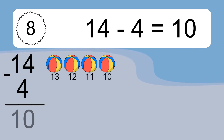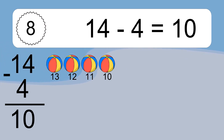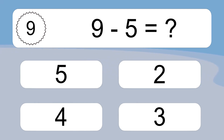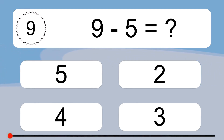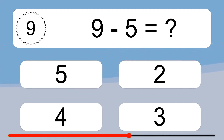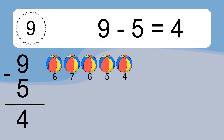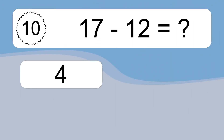Fourteen minus four equals what? Fourteen minus four equals ten. Let's count it: 13, 12, 11, 10. Nine minus five equals what? Nine minus five equals four. Let's count it: 8, 7, 6, 5, 4.